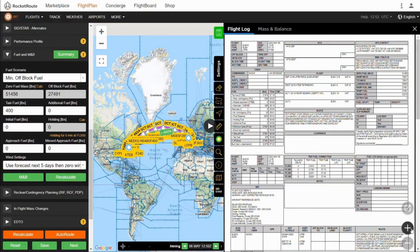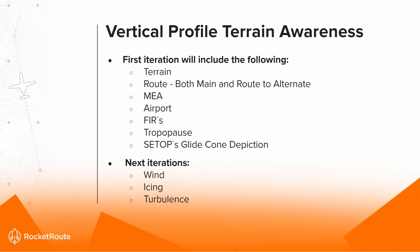You can also look at the mass and balance and zoom in to see relevant information. If making changes on the left-hand side, the page will refresh with the new figures on the right-hand side. The next improvement will include the vertical profile terrain awareness panel. The first iteration will include terrain route for both main and alternate routes, MEA data, airports, FIRs, chokepoints, and — for single engine turbine operations — will also depict the glide cone. Further iterations will include wind barbs, icing, and turbulence.